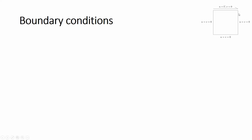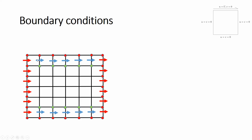An important part is the boundary conditions. For the U velocity, we can solve for interior points, but on the left and right walls U should be zero. So the U velocities at those walls — shown in red — are directly set to zero. We also have the extra yellow layer at the bottom, added specifically for satisfying the boundary condition.